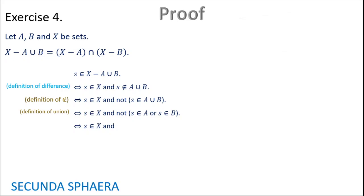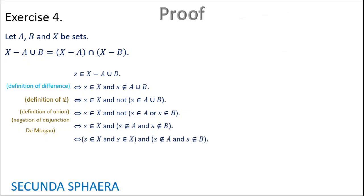So we have s in X and, in this case, we negate the terms and change the connector. By De Morgan's law for negation of disjunction, we get s is not in A and s is not in B. At this moment we have three terms connected by ANDs. We can use associativity of conjunction. However, first we use introduction of conjunction — because we know s is in X, it is true that s is in X and s is in X — so that is allowed and it is equivalent.